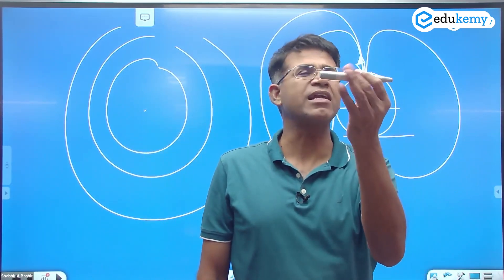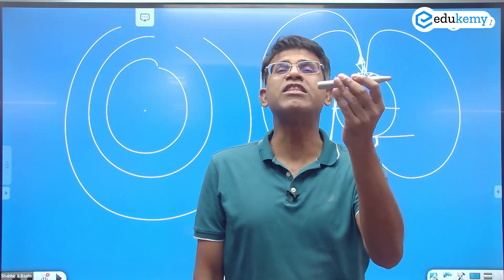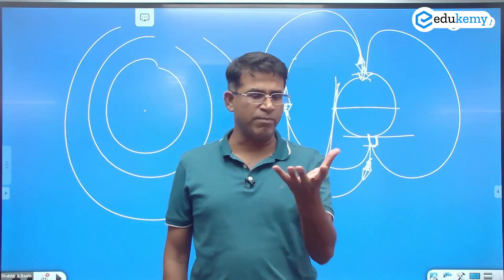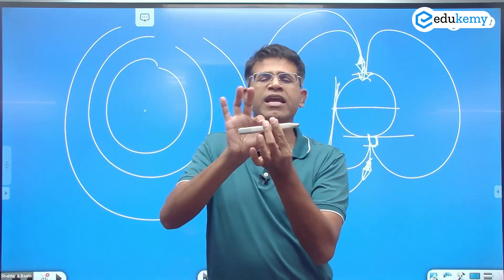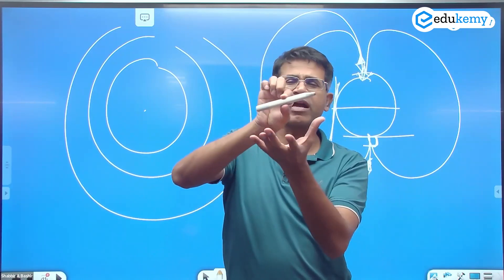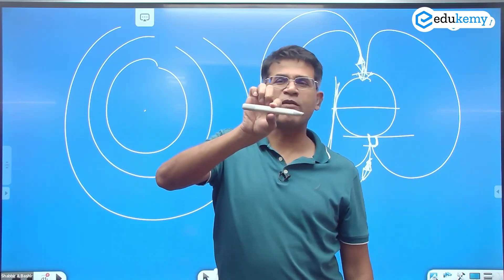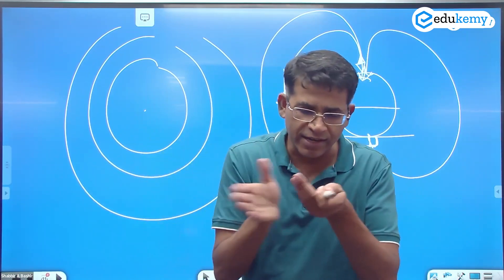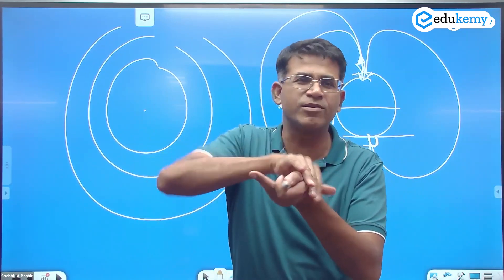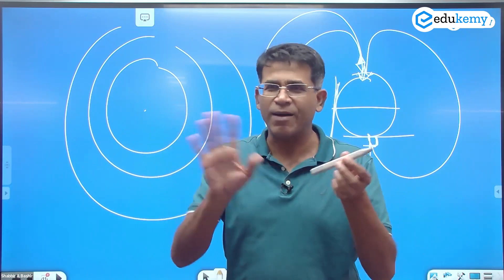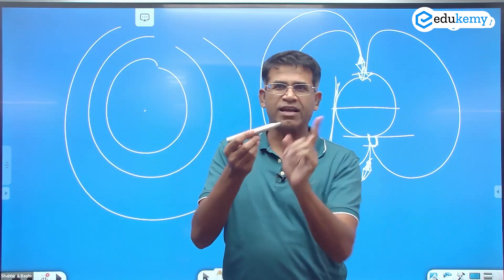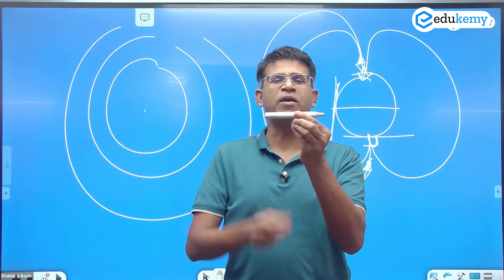The angle that a needle makes with the horizontal. So if you have ever seen a compass, many compass you'll find the needle is never perfectly horizontal. Valkas has a tilt hoga. Some of us think ki kharab hai.